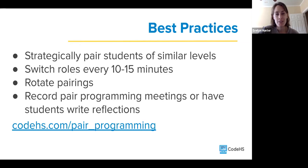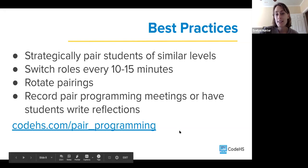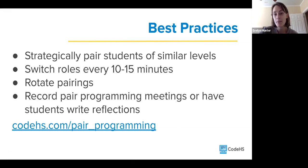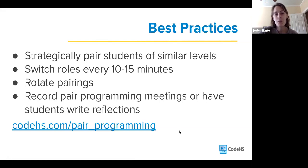You should have students switch roles every 10 to 15 minutes. One suggestion for holding students accountable — since you're not in the room — is to have students record their screen and discussion during pair programming and send you a video. You don't have to watch all 15 minutes for every group, but you can spot-check to make sure you're hearing two voices, not just one. You can also have students write individual reflections about their own contributions and their peers' contributions as another way to hold everyone accountable for good pair programming practices.